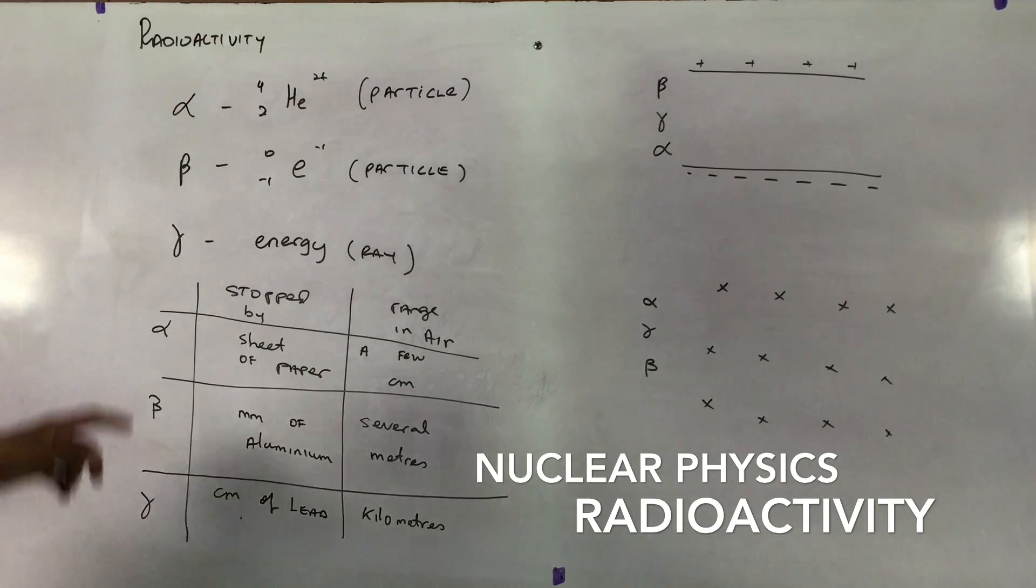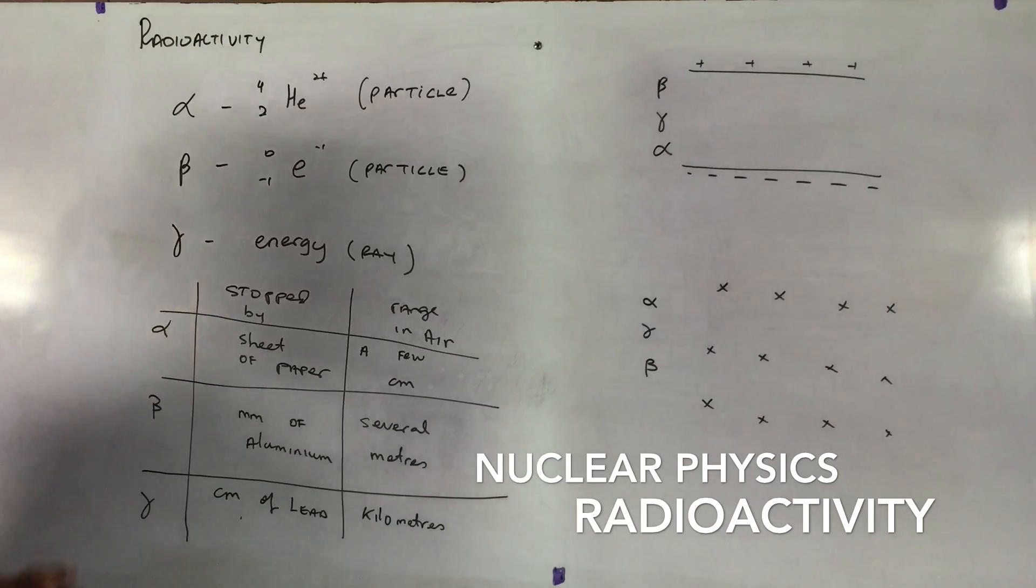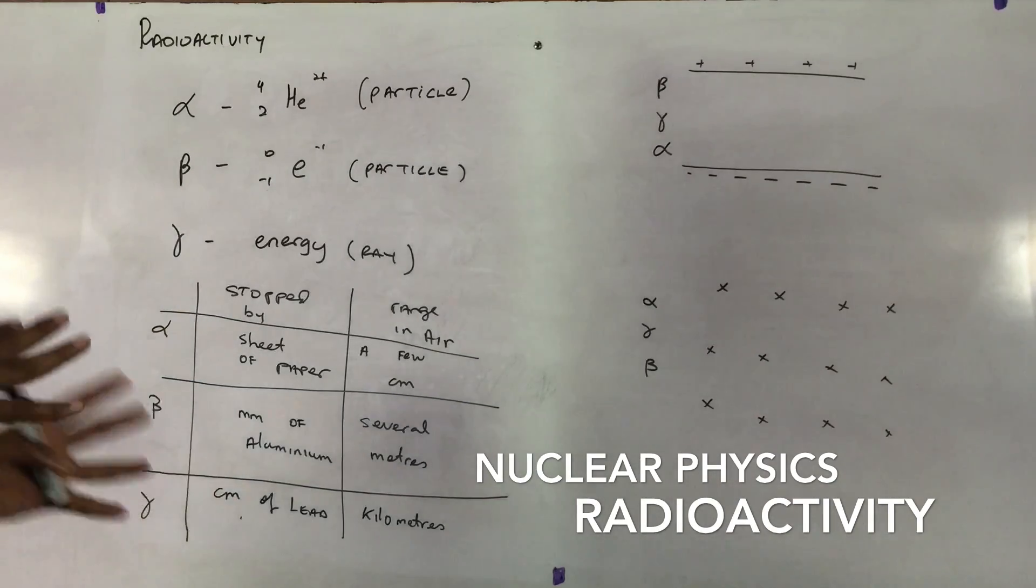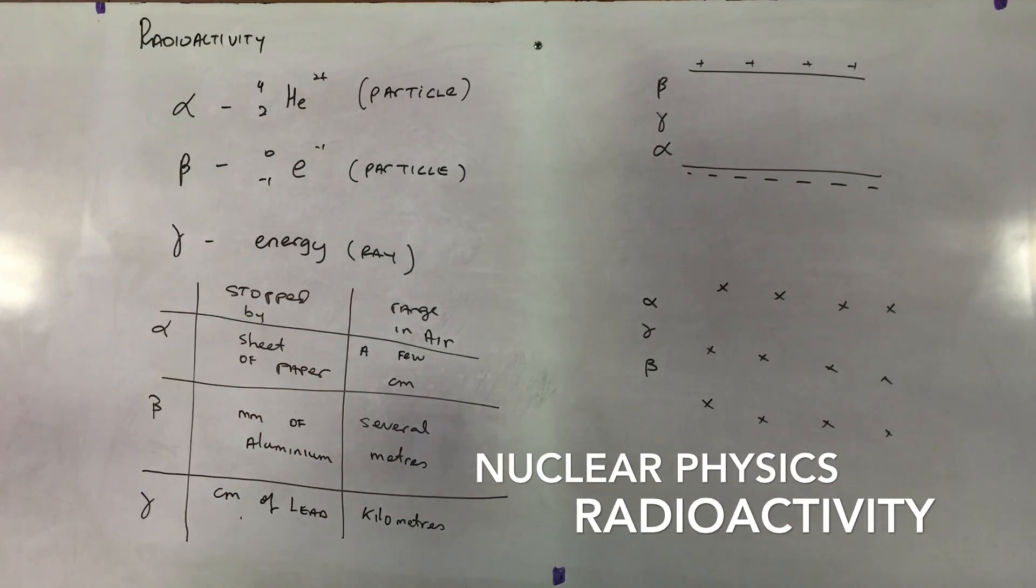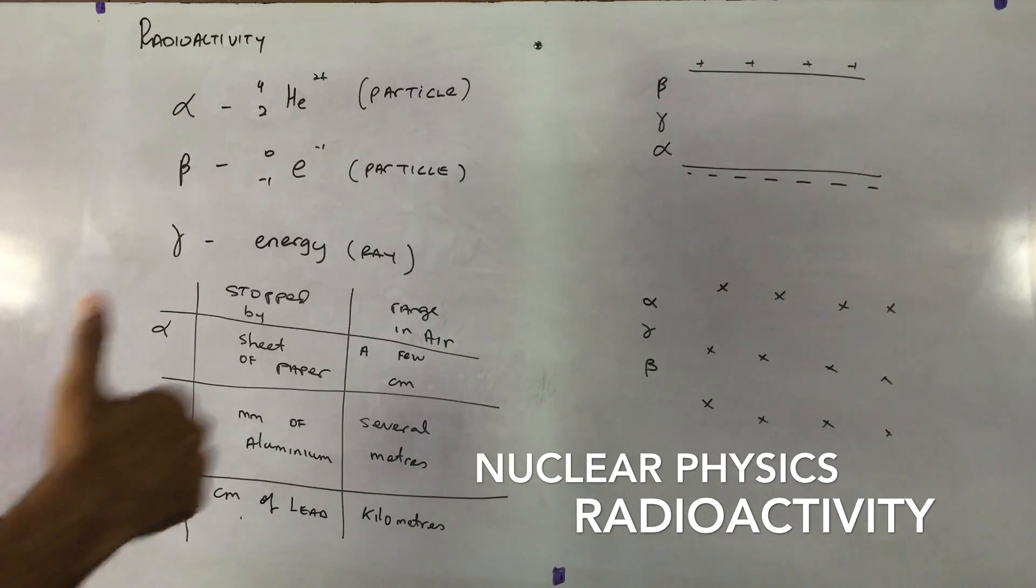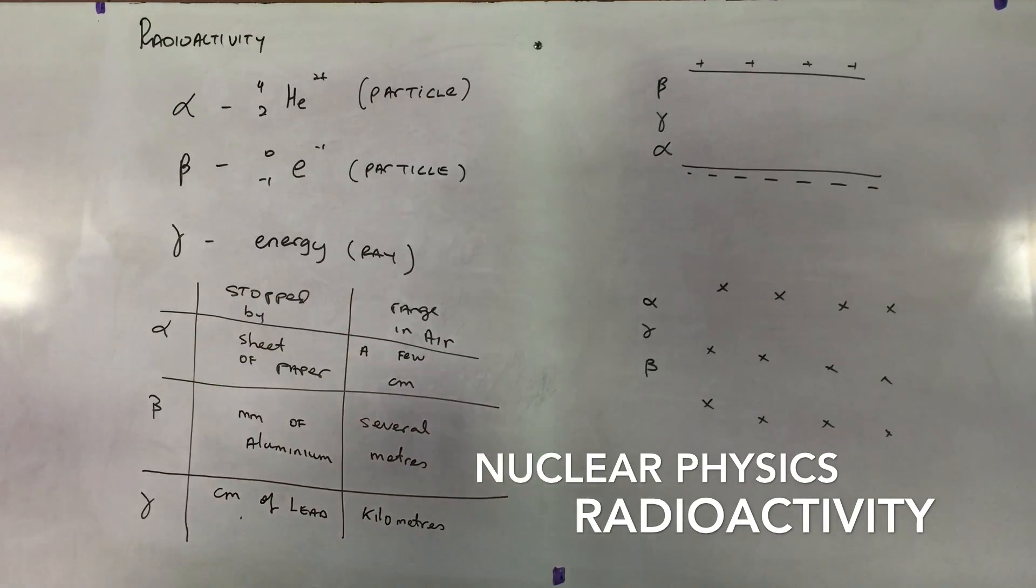About the alpha, beta and gamma, the alpha particle is stopped by a sheet of paper. So if we have an alpha particle and a sheet of paper is placed in front, the alpha particle will not be able to penetrate the sheet of paper.